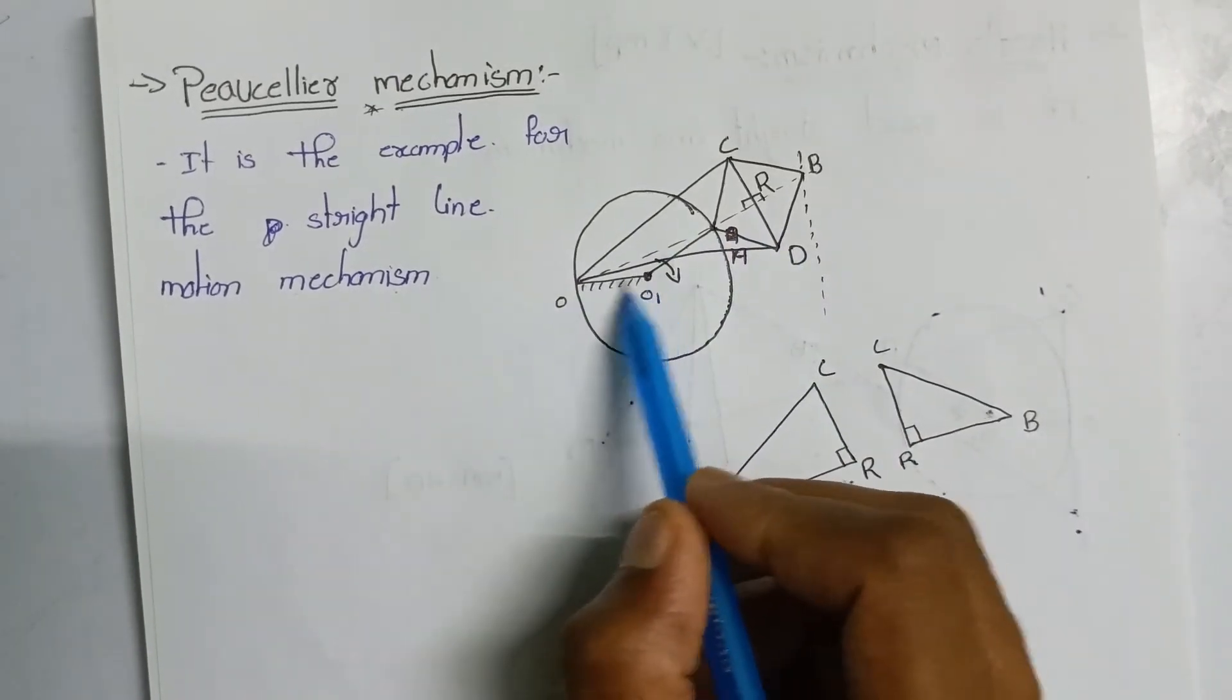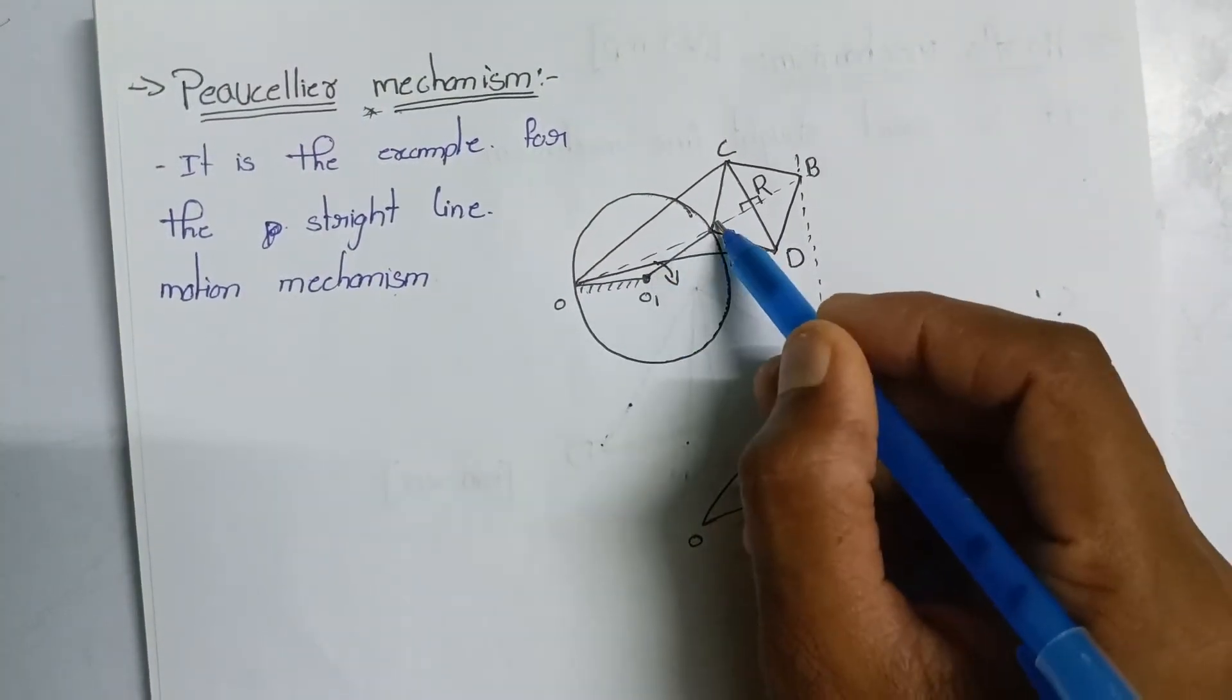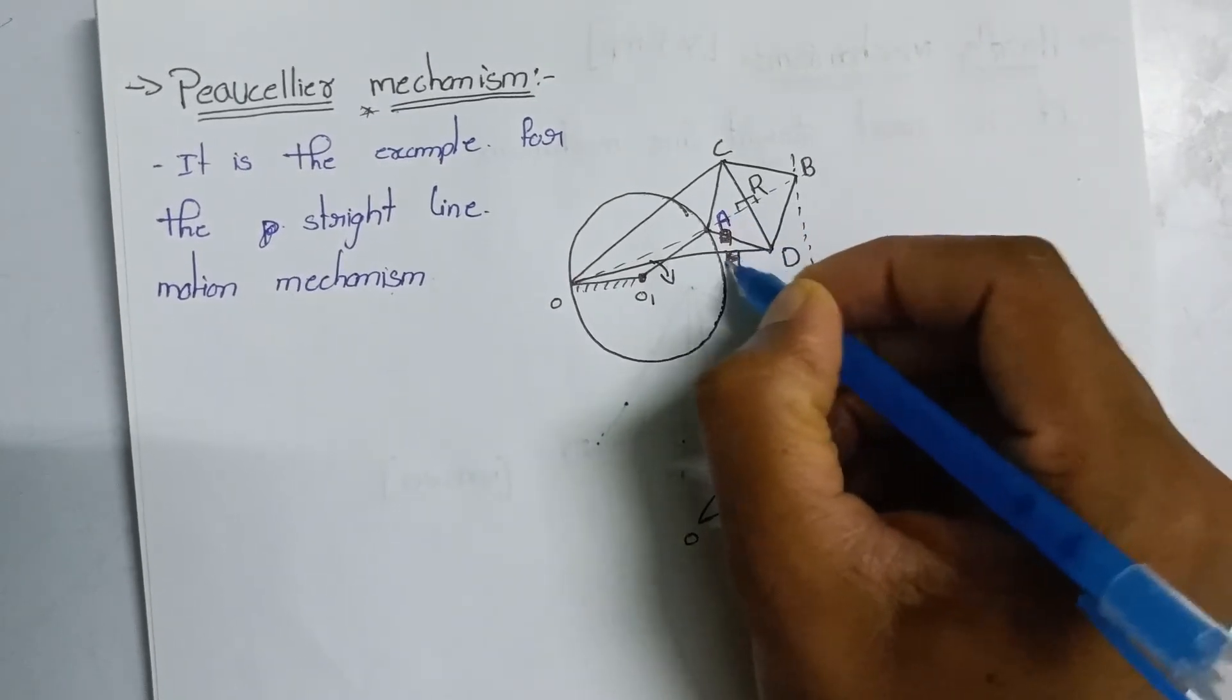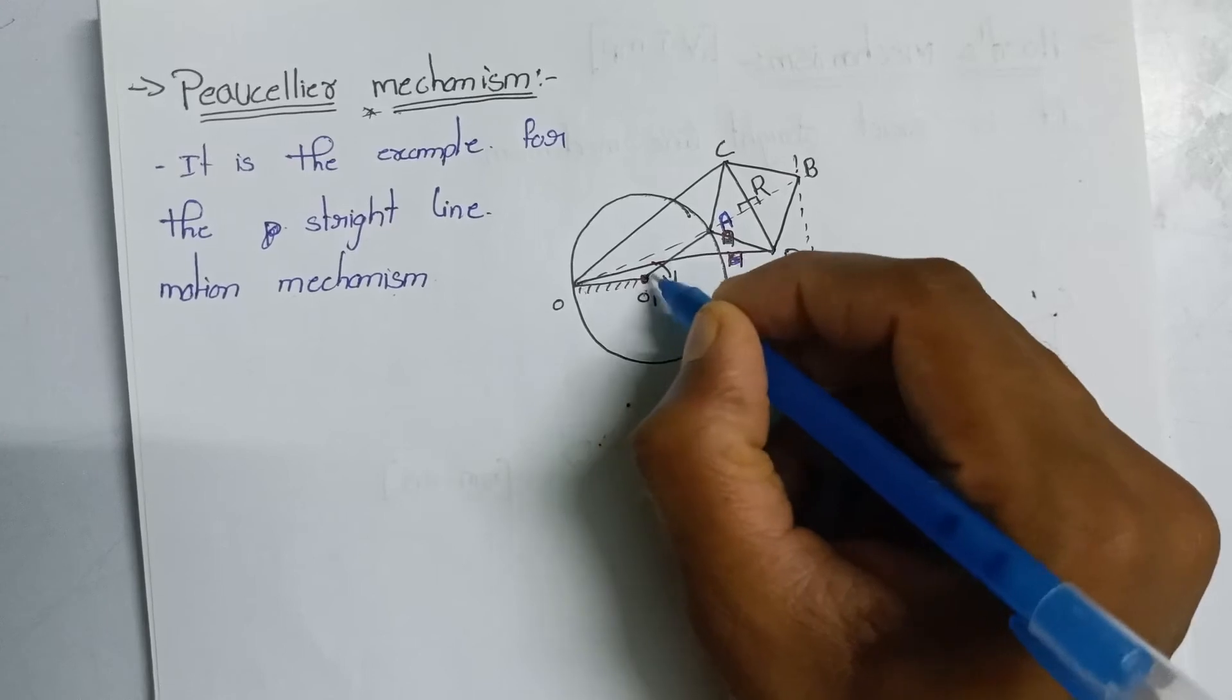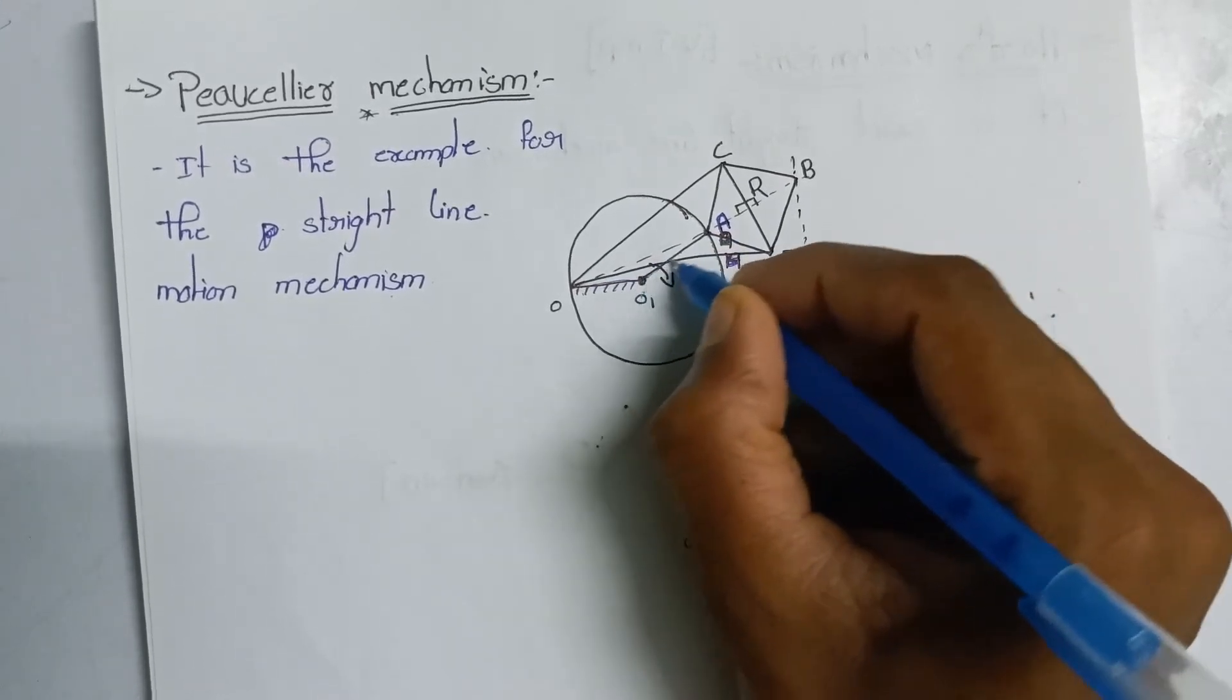This is the diameter of the circle. The diameter of the circle is O. O1 is equal to O1A. This is the radius of the circle.